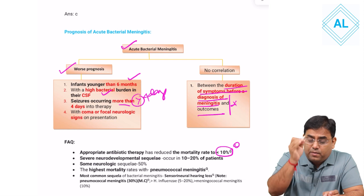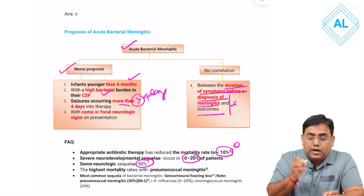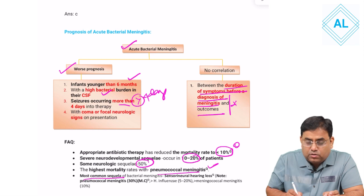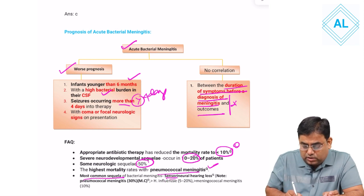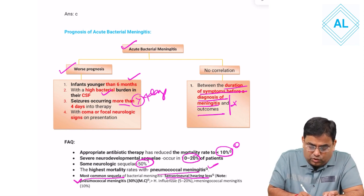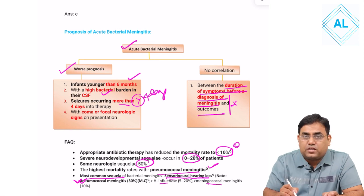Antibiotic therapy reduces mortality by 10%. Adverse neurodevelopmental outcome occurs in 10 to 20%, some neurological sequelae in 50%. The highest mortality is seen in pneumococcal meningitis. The most common sequela of bacterial meningitis is sensorineural hearing loss, most commonly associated with pneumococcal meningitis and H. influenzae meningitis.